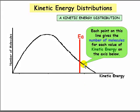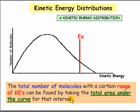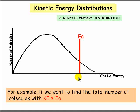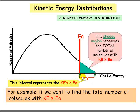Each point on this line gives the number of molecules with each kinetic energy. For example, there's this many molecules that possess this amount of kinetic energy. The total number of molecules with a certain range of kinetic energies can be found by taking the total area under the curve for that interval. For example, considering the interval of molecules with kinetic energy greater than or equal to the activation energy EA, the shaded region — the area under the curve in this interval — represents the total number of molecules with kinetic energy greater than or equal to EA.